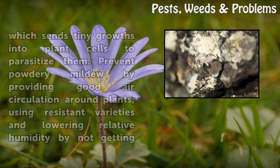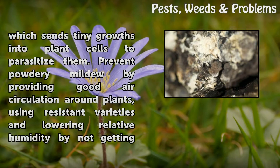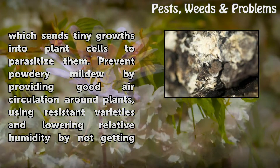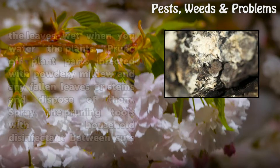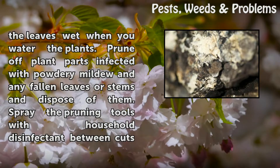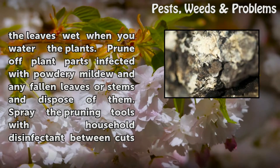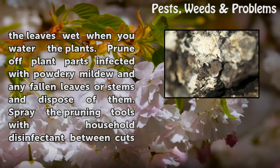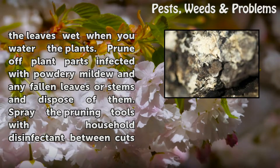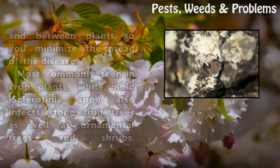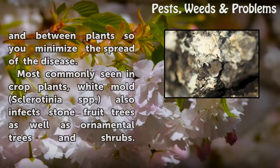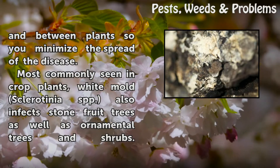This is the fungus mycelium, which sends tiny growths into plant cells to parasitize them. Prevent powdery mildew by providing good air circulation around plants, using resistant varieties, and lowering relative humidity by not getting the leaves wet when you water the plants. Prune off plant parts infected with powdery mildew and any fallen leaves or stems and dispose of them.